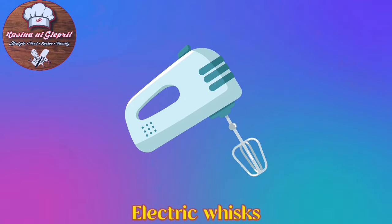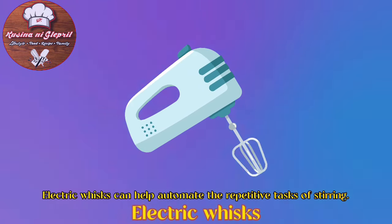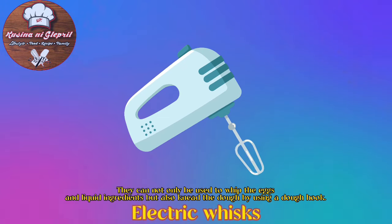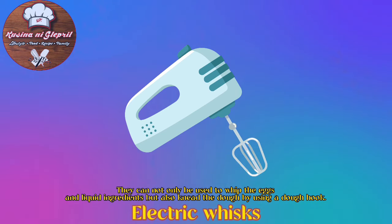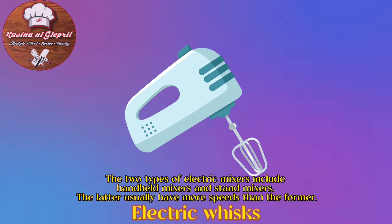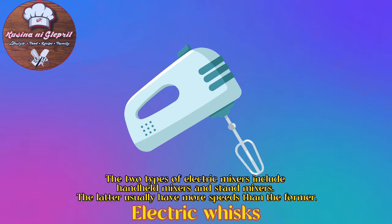Electric Whisks: Electric whisks help automate the repetitive tasks of stirring. They can not only be used to whip eggs and liquid ingredients, but also knead the dough by using a dough hook. The two types of electric mixers include handheld mixers and stand mixers, with the latter usually having more speeds than the former.